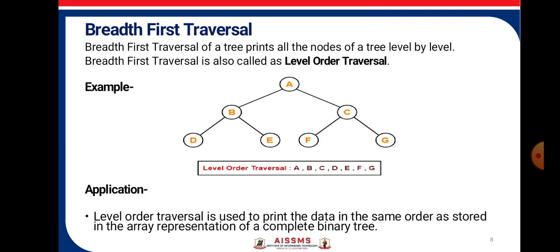Breadth First Traversal is another technique of traversal. Breadth First Traversal of a tree prints all the nodes of a tree level by level, so it is also called level order traversal. Consider the example — the level order traversal we get is A, B, C, D, E, F, G. The application of it is to print the data in the same order as stored in the array representation of a complete binary tree.